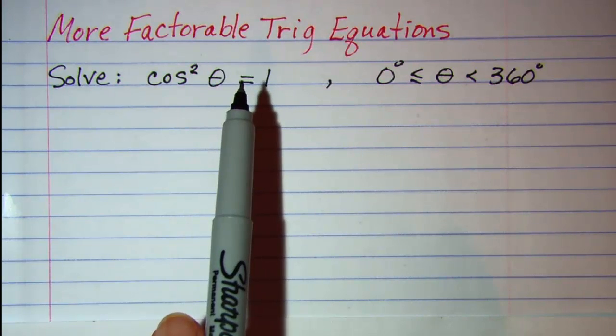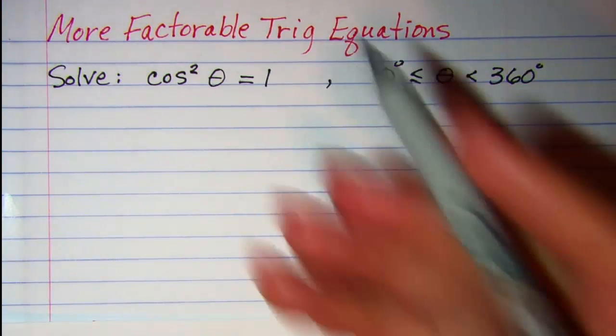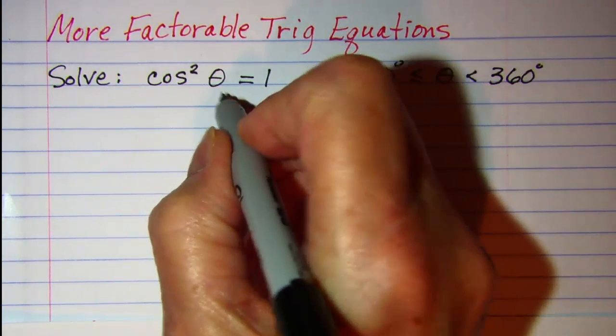I'm going to do this by factoring so I'm going to move this 1 to the left by subtracting 1 from both sides.